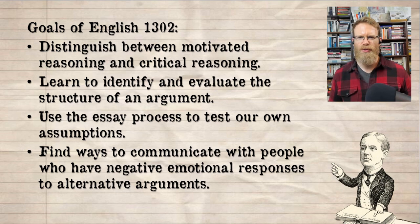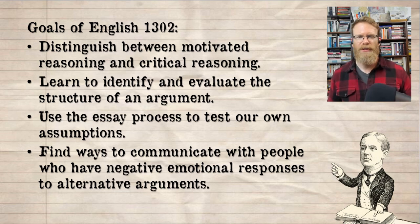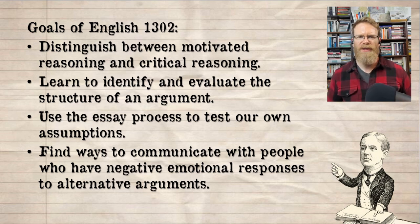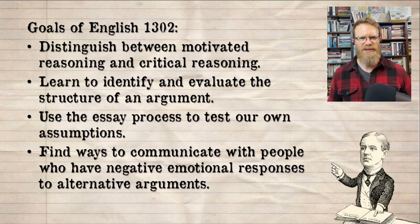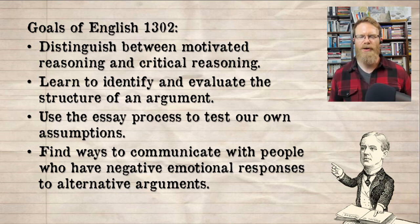We can all use intelligence to critically evaluate an idea we're not really attached to — an argument someone else makes that we don't believe in ourselves, especially if we disagree with it. We're really good at showing that information is inaccurate or that a reason doesn't lead to a conclusion, when it's somebody else's and we're not invested in it. But when it's our own assumption, our own belief, our own foregone conclusion, we're not very good at critically evaluating the argument that supports it. In fact, we're motivated to cherry-pick data, to use logical fallacies to make that conclusion seem like the only or the best one, while ignoring counter-evidence. When we do that, we're doing the opposite of critical reasoning — that's called motivated reasoning.